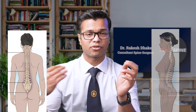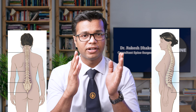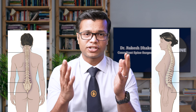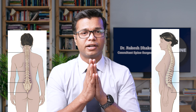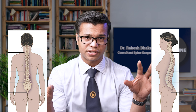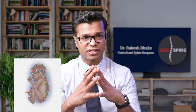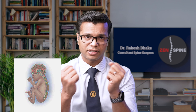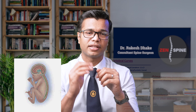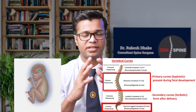When you look at the spine from the side, the spine has curvatures which are different in different regions. These curvatures in the spine are divided into primary and secondary curvatures. The primary curvatures mean that we were born with these curvatures in the fetal position, as the fetus was in the curled up position. These were the primary curvatures which were in the thoracic and the sacral region.